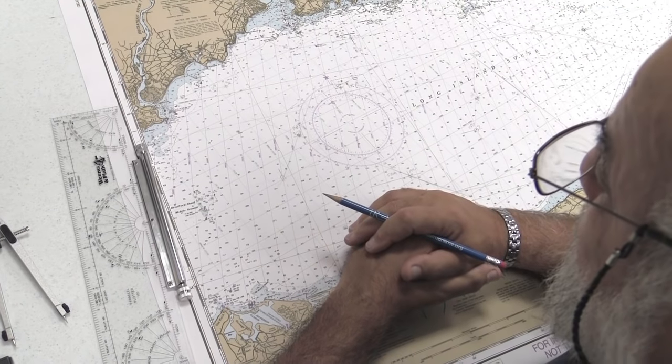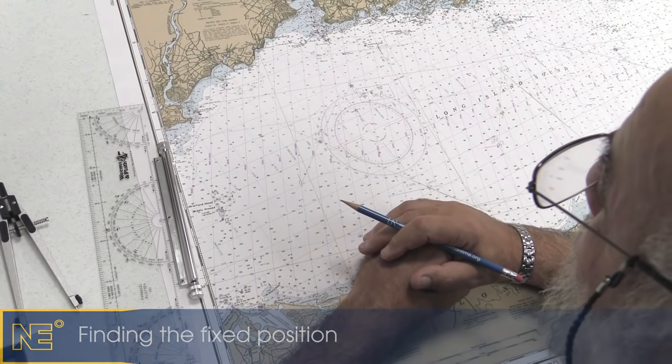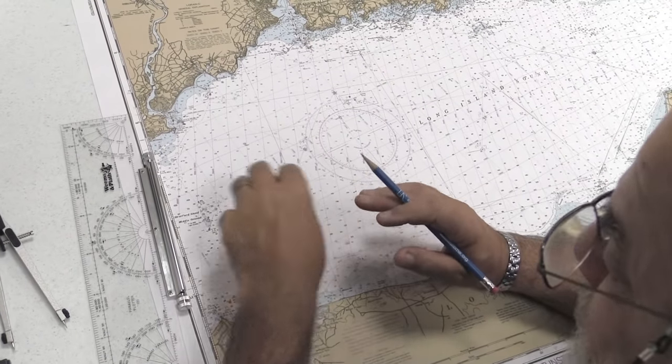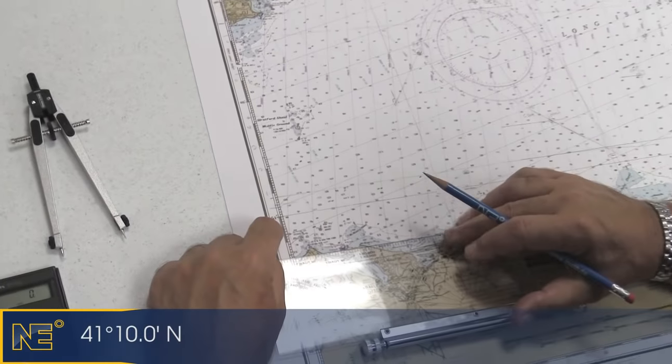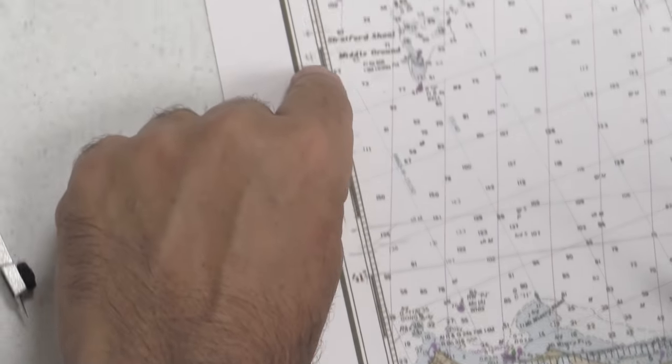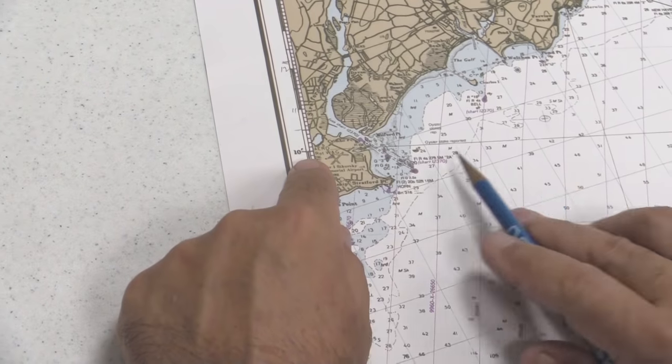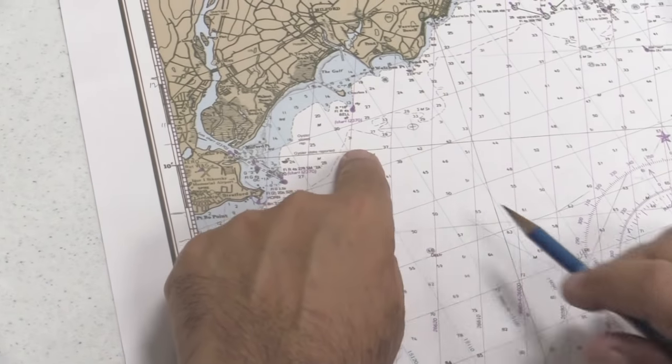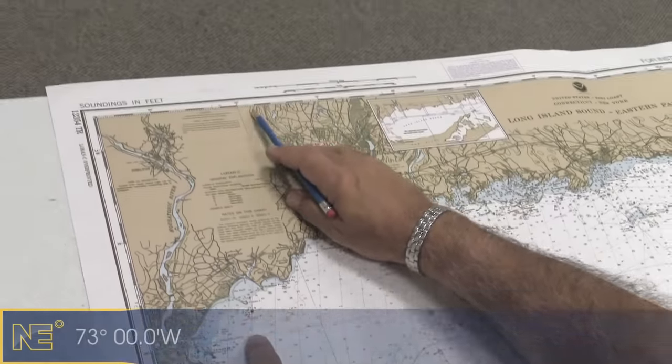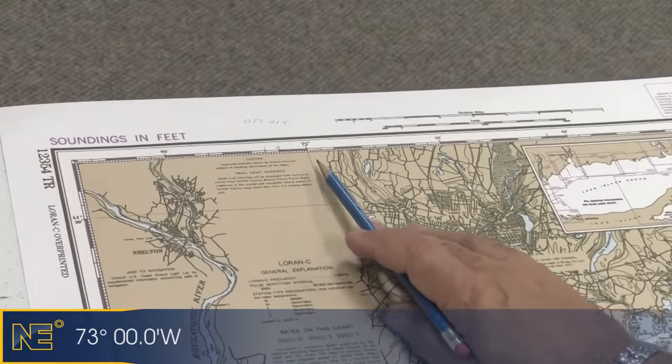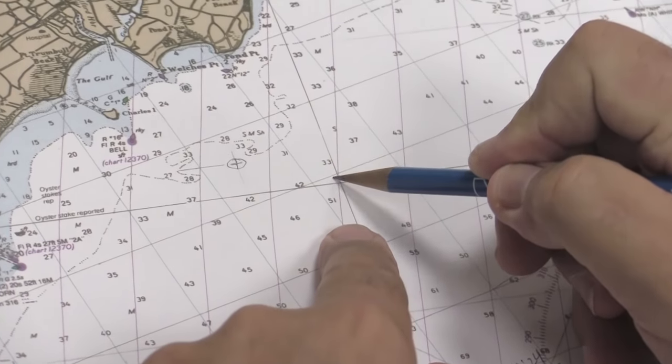So the first thing we need to do is find our fixed position. Our position given to us was 41° 10.0', so on the left hand side of the chart we find 41, move up until we find the 10. The other position given to us is 73° 00.0', so 41° 10' and 73° meet right here.